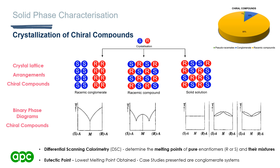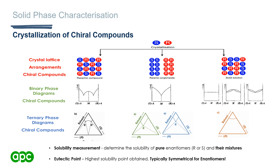During binary phase diagram characterization, we use DSC to monitor the melting points of solid mixtures of our chiral compounds. During ternary phase diagram construction, we assess the solubility of solid mixtures and plot this on the ternary phase diagram, where the eutectic point is the highest solubility point of the mixture. Due to enantiomers having identical physical properties, we expect a symmetrical diagram, whereas a diastereomeric system may show a non-symmetrical diagram. Examples of these will be shown in the case studies.